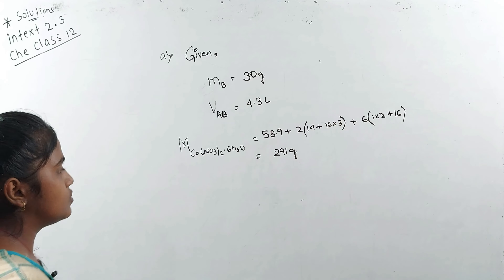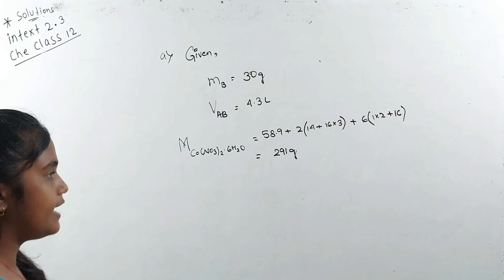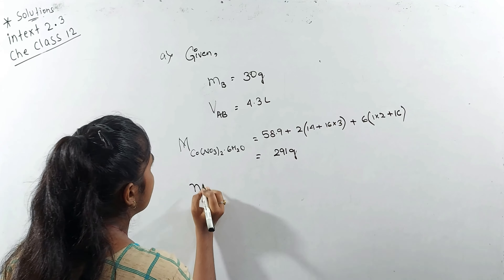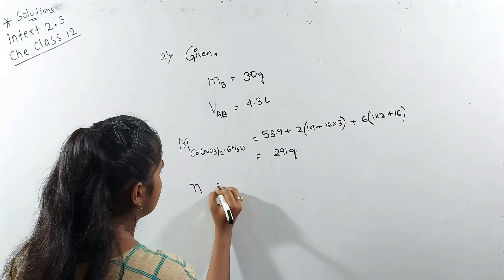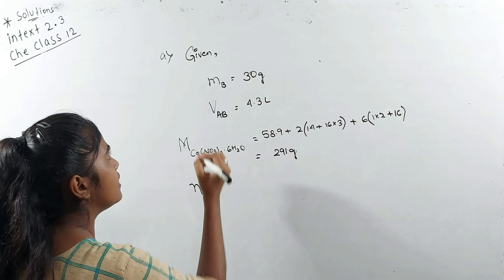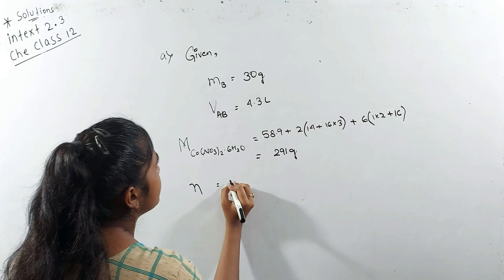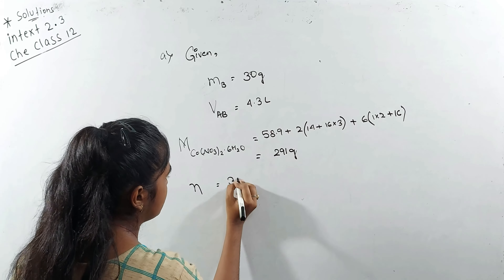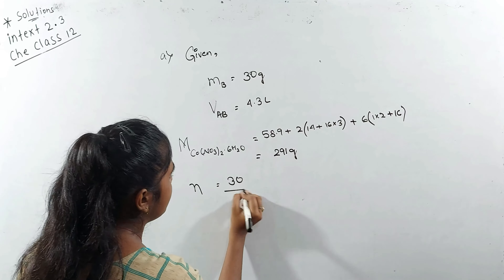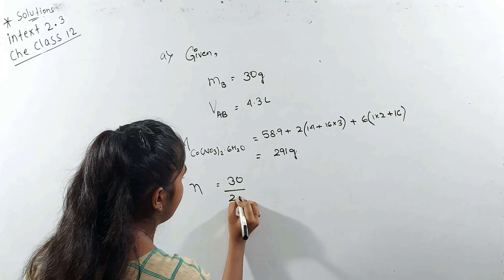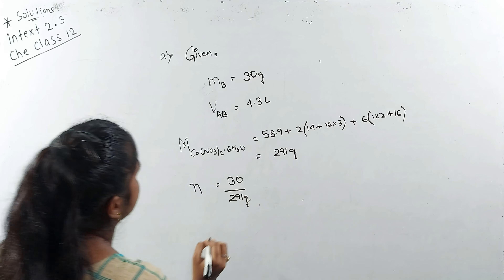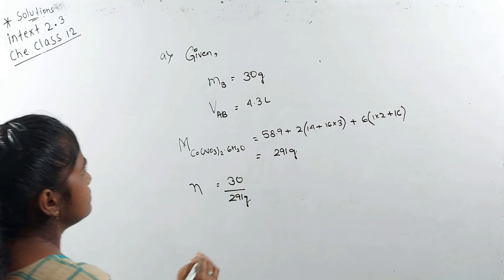Now we have to find the molarity. The molarity formula is: moles of solute divided by volume of solution in liters. Here I have the mass given, but not the moles, so first of all we need the molar mass. So we write the molar mass of Co(NO₃)₂·6H₂O.